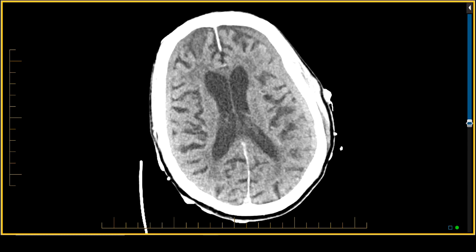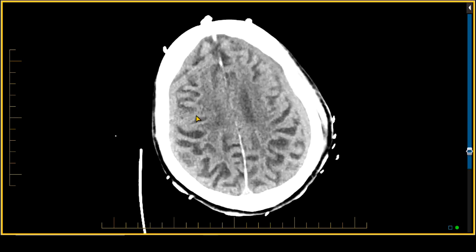Now, we know that these are not subacute hematomas. This is isodense subdural hemorrhage secondary to dilution of the low-density chronic subdural hematomas with new acute blood. So we take low-density blood in the chronic subdural, we add acute higher-density blood from the acute subdural, mix them together — and what do you get? An isodense subdural bilaterally in this patient.